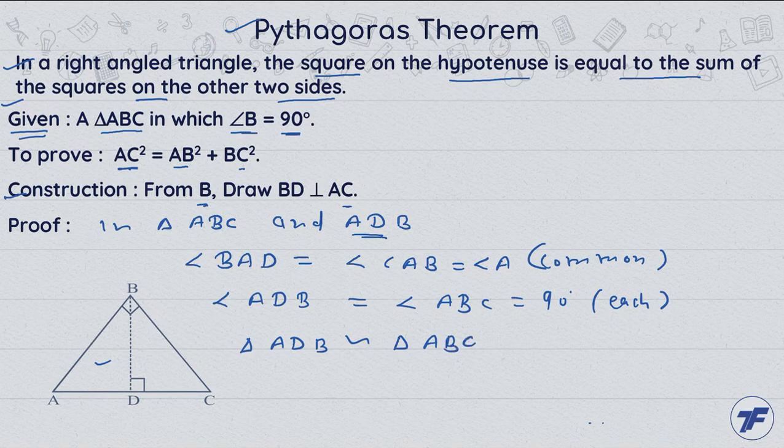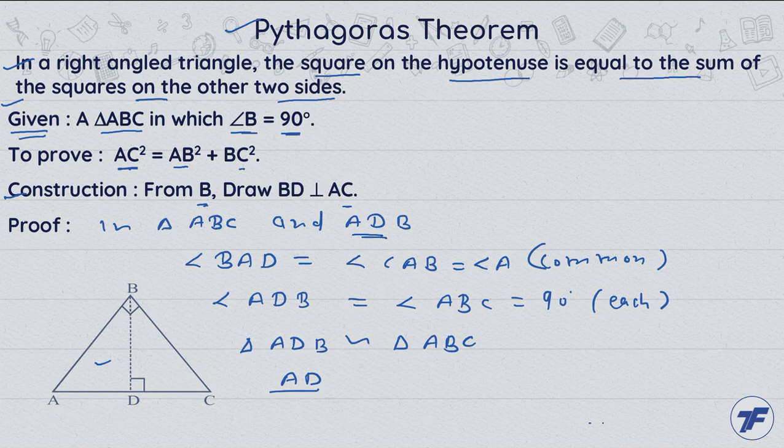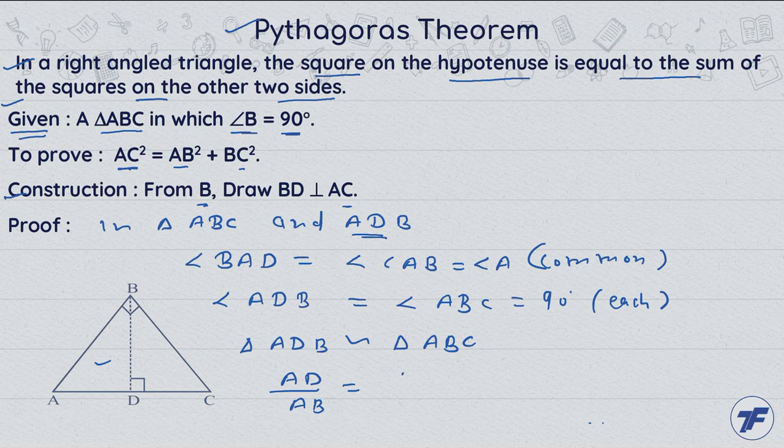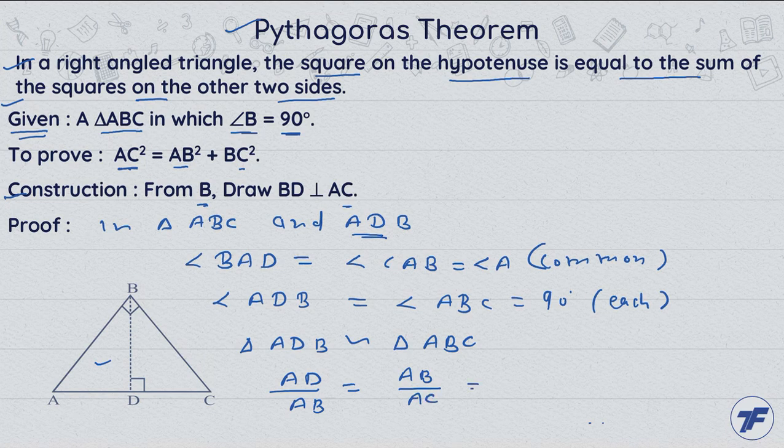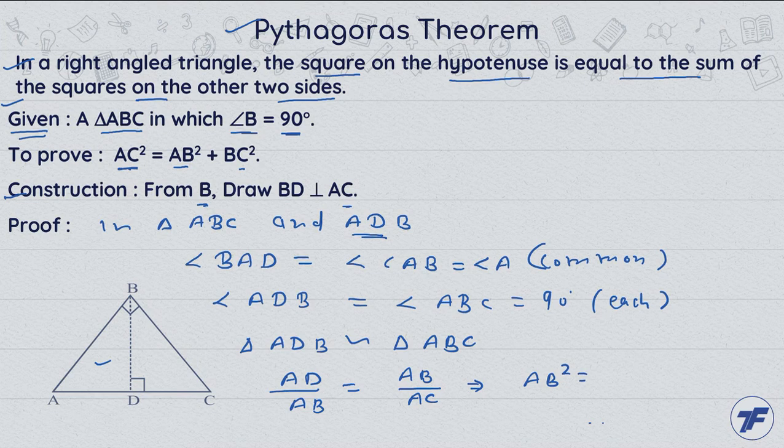It means corresponding sides ratios: AD upon AB equal to AB upon AC. Cross multiply, what will happen? AB squared equal to AD into AC. This is our first equation.